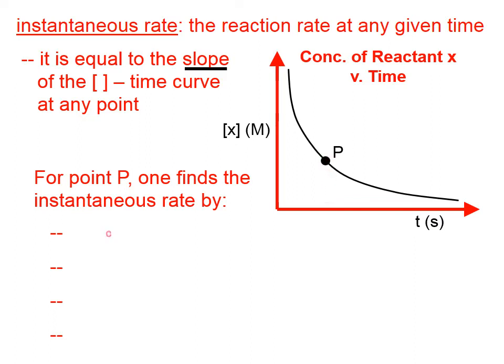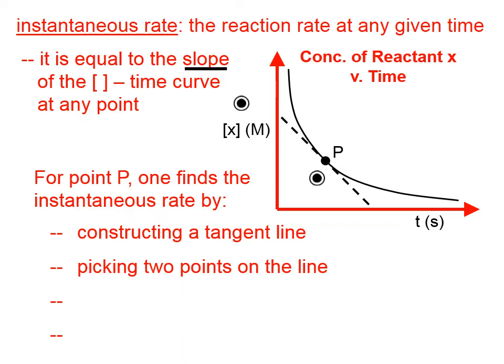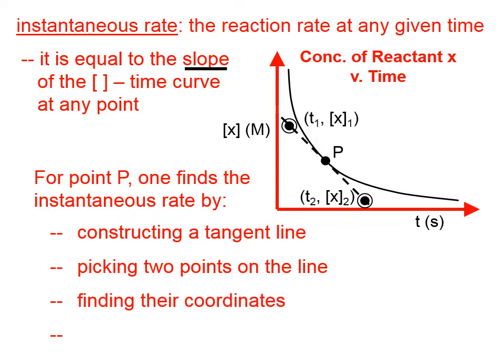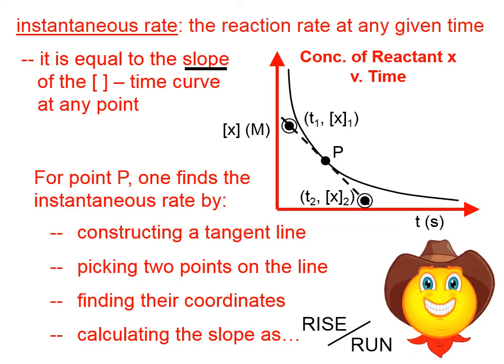If you were doing it in the old-fashioned way, you would construct a tangent line, and you would find two very identifiable points that were on that line. You would write down their coordinates, and then you would go rise over run, and that would tell you the slope. Of course, if you do this on a graphing calculator, you can often pick a point and have the calculator tell you what the slope is, but it's good to have an understanding of how it's done.